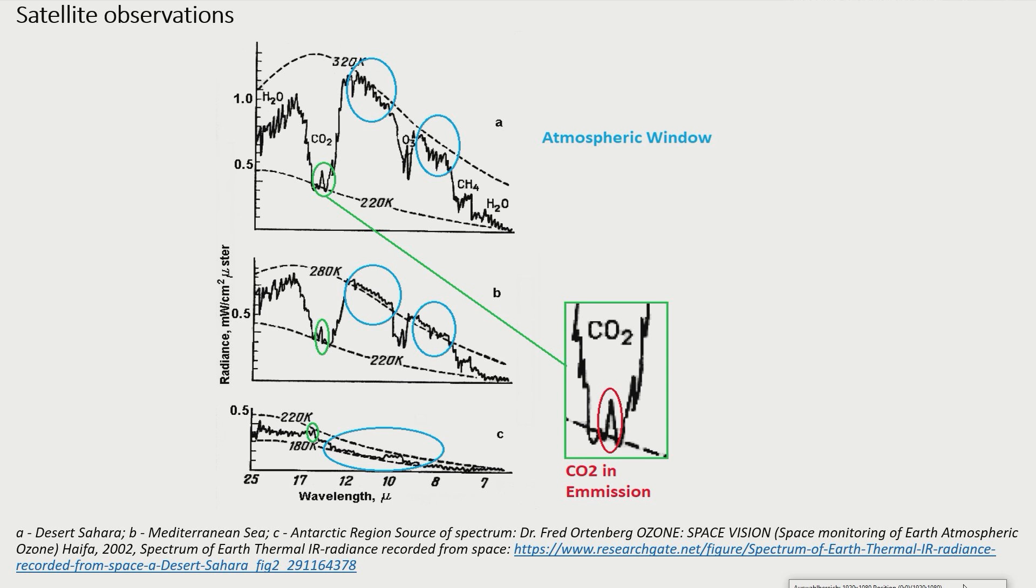The dashed curves each show the radiation of a black body with the temperature indicated in the curve. That means that if in spectrum B the Earth had no atmosphere or an atmosphere without greenhouse gases, the satellite would measure the dashed curve for 280 Kelvin.